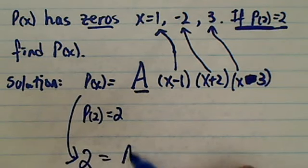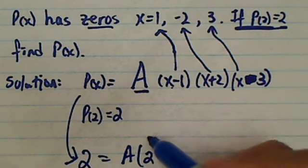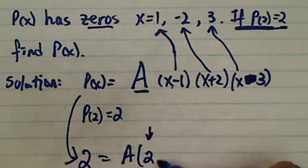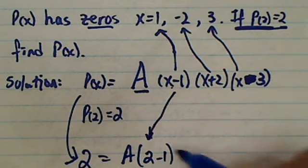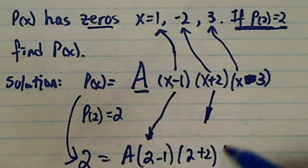If I substitute x equal to two, okay so x is equal to two. Two minus one, that's just this term. This term is two plus two, and the next term is two minus three, that's this term.